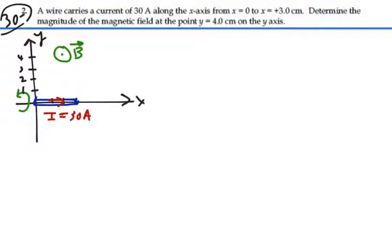We want to find out what that value of that magnetic field is at y equals four. Well, we have a formula for this, for a line segment of wire. The magnetic field at this point is going to be equal to mu-naught i over four pi r cosine theta one minus cosine theta two.